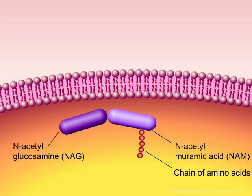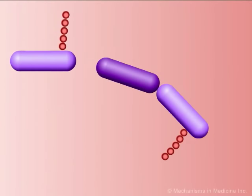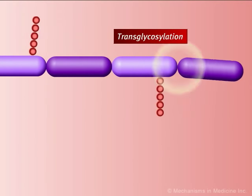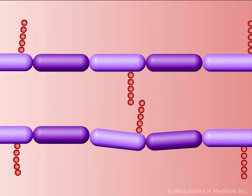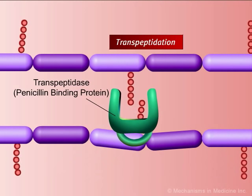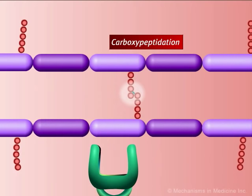This peptidoglycan precursor is then transported across the cell membrane to a cell wall acceptor in the periplasm. Once in the periplasm, the peptidoglycan precursors bind to cell wall acceptors and undergo extensive cross-linking. Two major enzymes are involved in cross-linking: transpeptidase and D-alanylcarboxypeptidase. These enzymes are also known as penicillin-binding proteins because of their ability to bind to penicillins and cephalosporins.